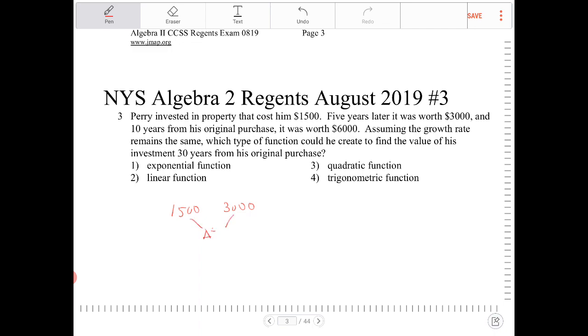So the change in time is five. And then from $3,000, the change in time is again five years, because it's 10 years since the beginning, to $6,000. So we again doubled.